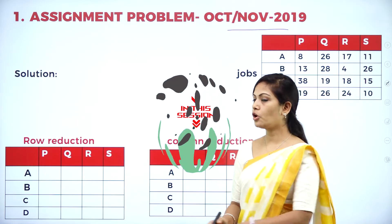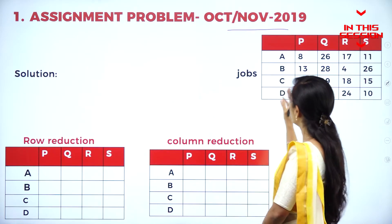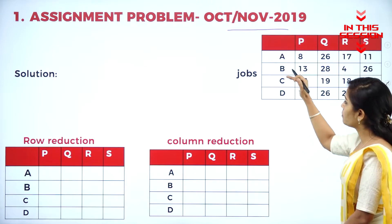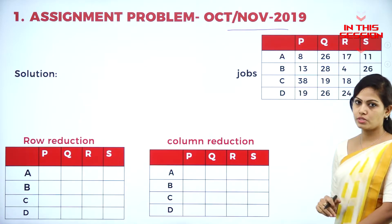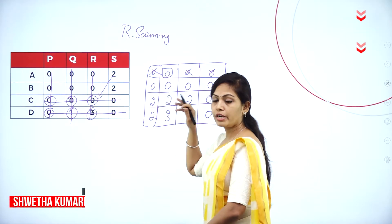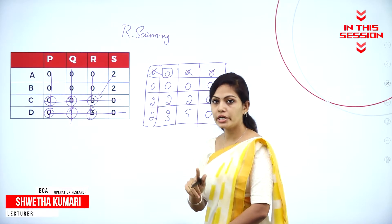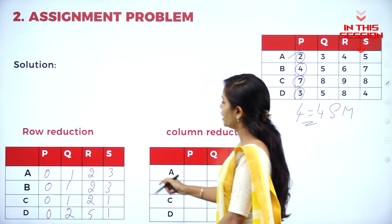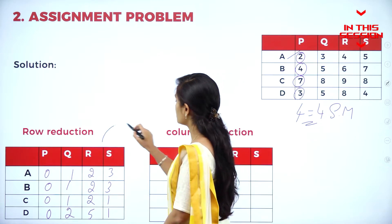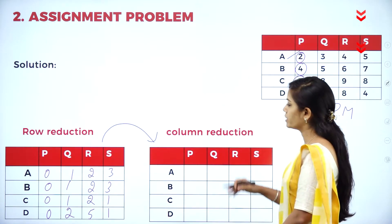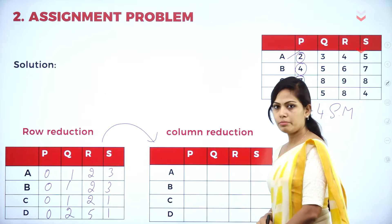So how to check the balance problem or unbalance? The number of columns should be equal to the number of rows — then we can call it a balanced problem. In one row and one column you have to assign only one zero. How to find the column reduction? By using this row reduction matrix representation we can find the column reduction.